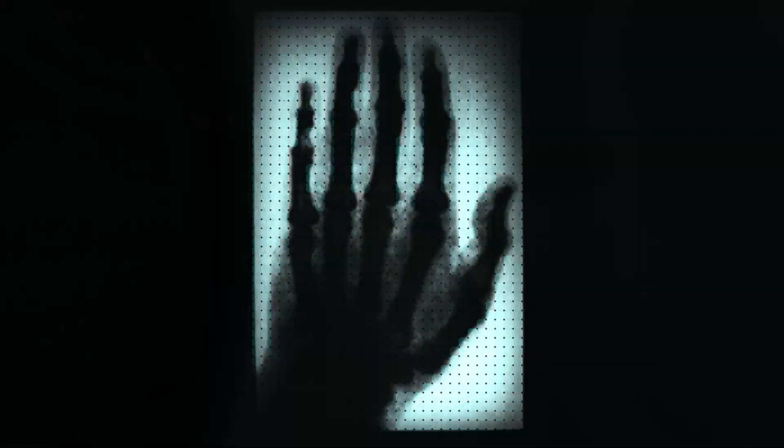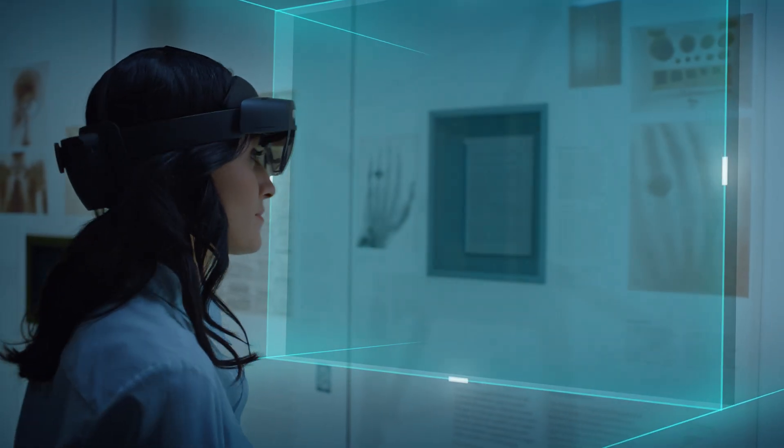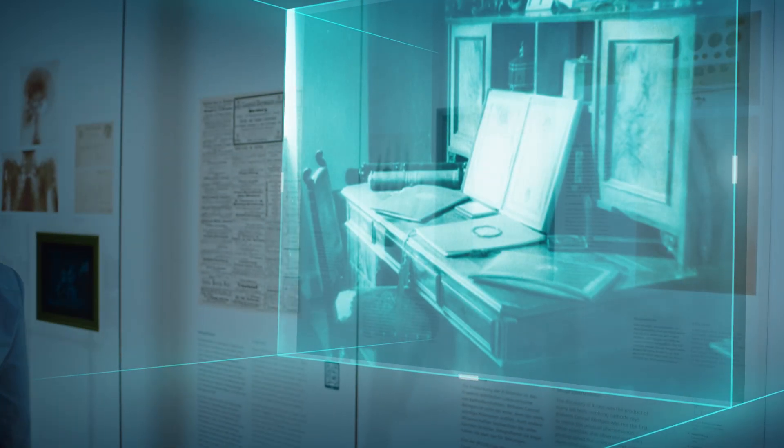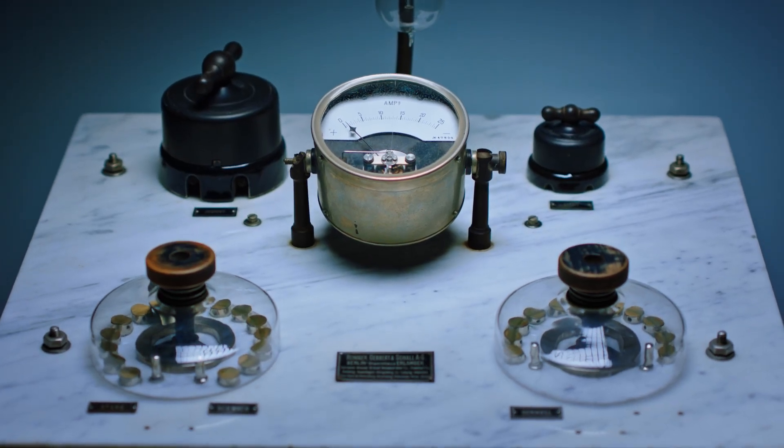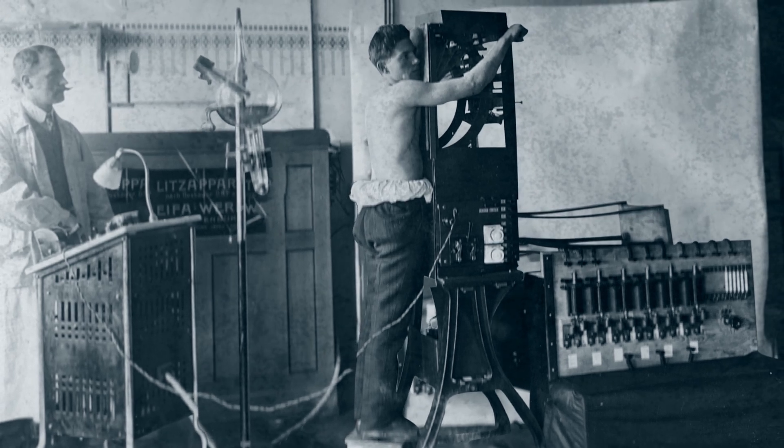It took 15 minutes for Röntgen to capture the world-famous first shot of his wife's hand. By 1909, we could take X-rays with our flash unit in just a few milliseconds, making the contours of the heart visible for the very first time.